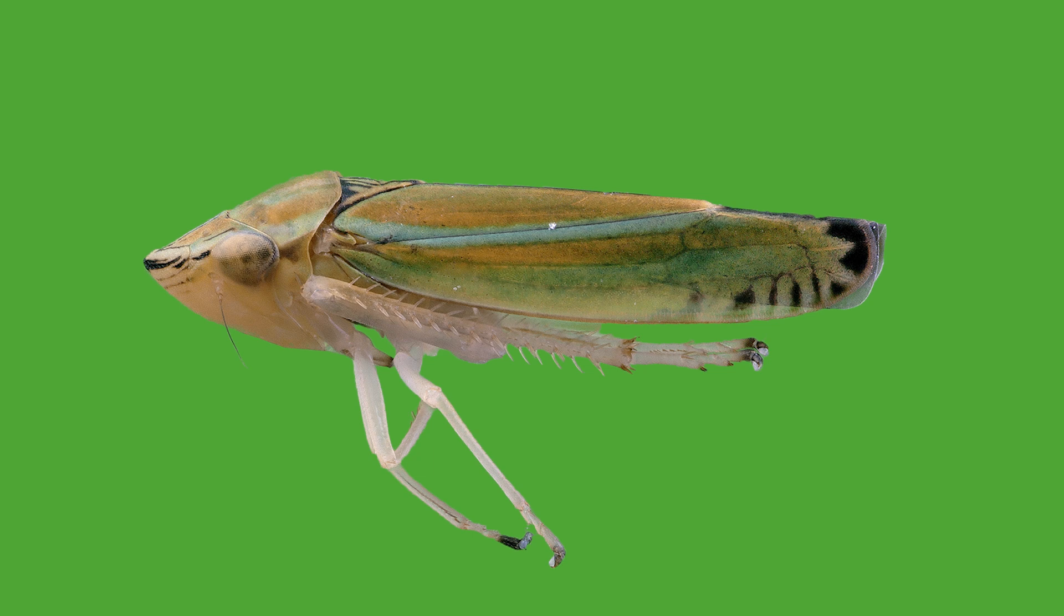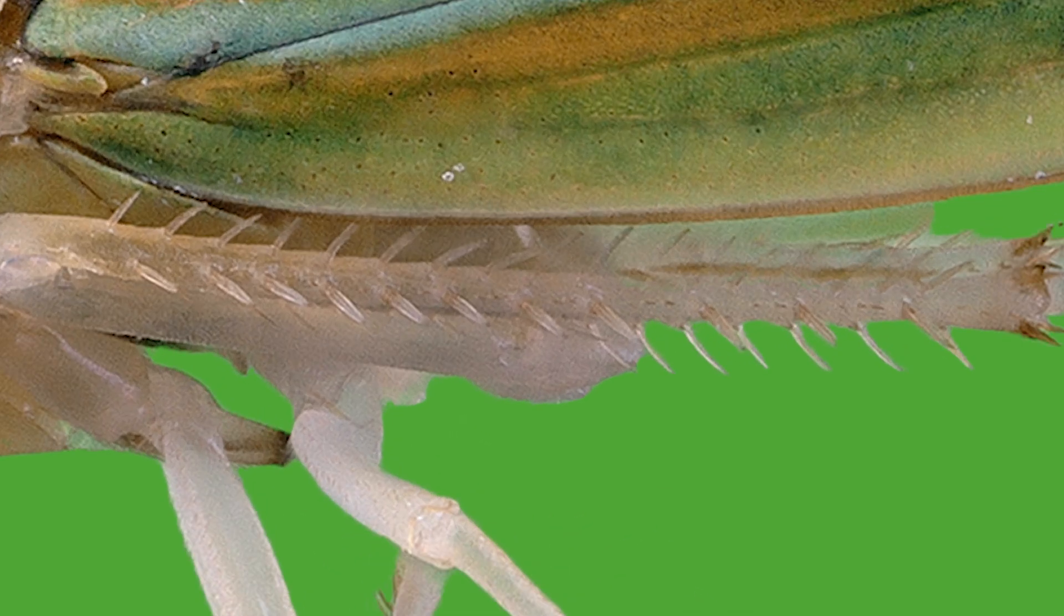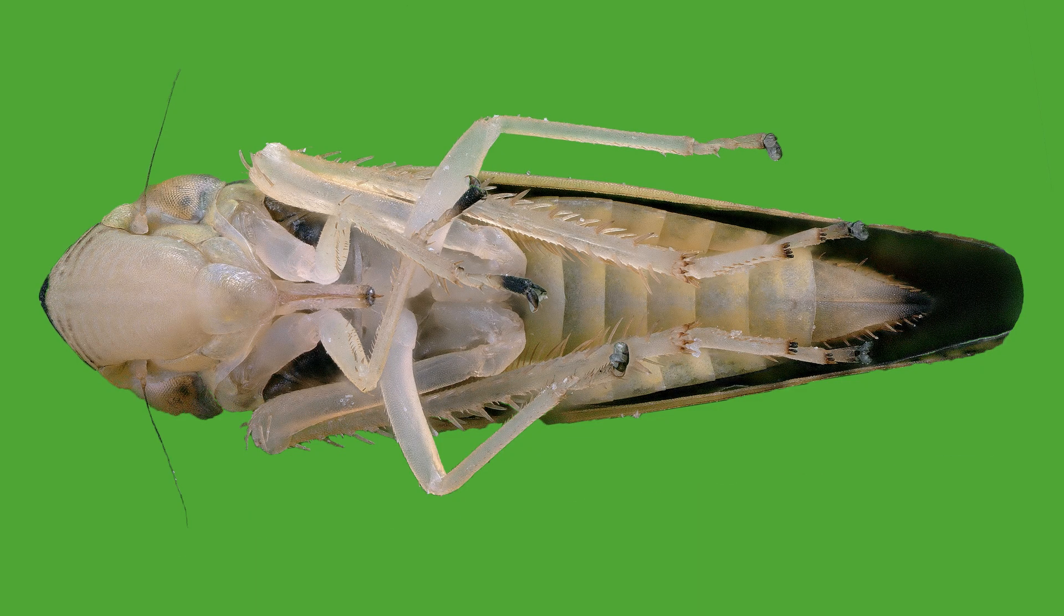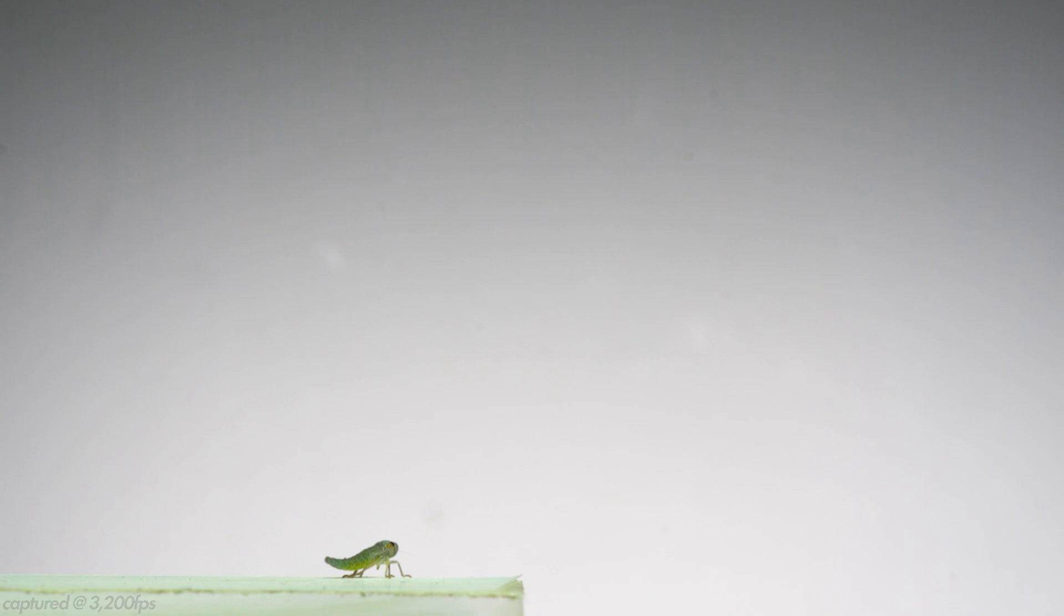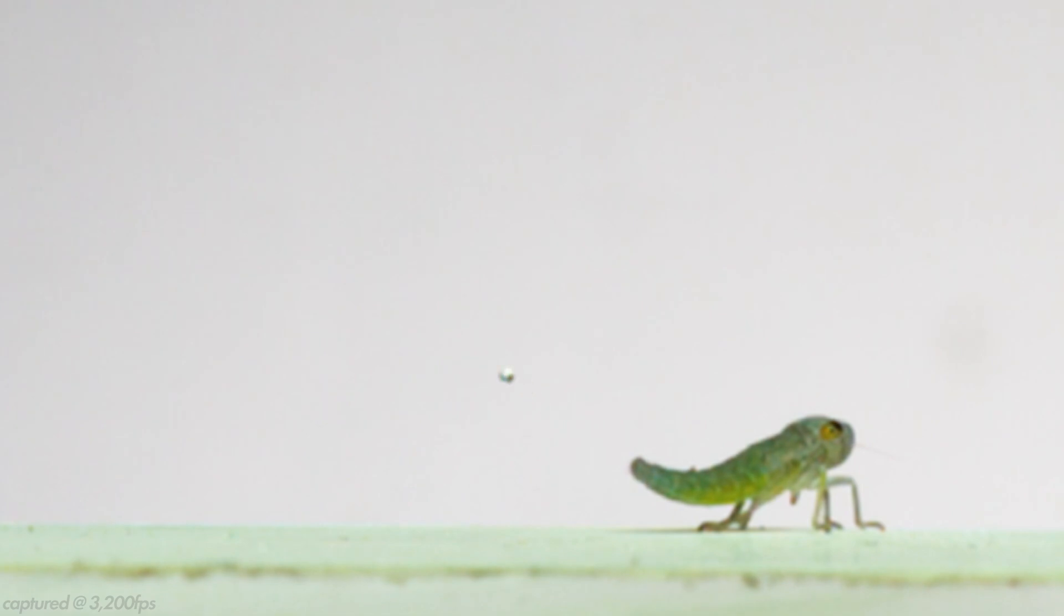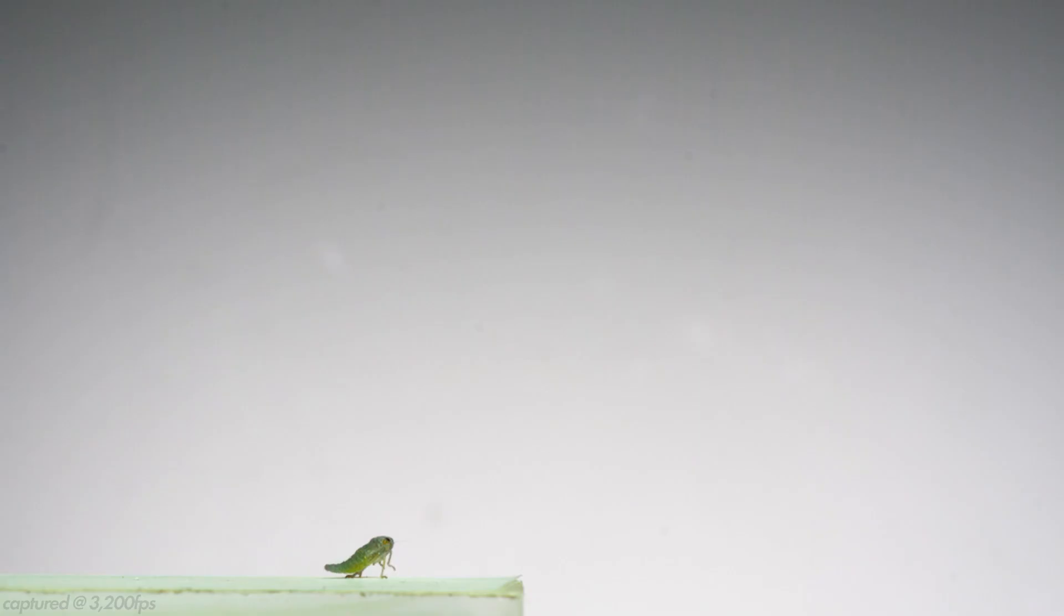My favorite kind of hopper might be a leafhopper. There are over 22,000 described species, and you can tell them apart from other types by the four rows of spines that run down their hind tibia. Like all the insects in this video, they have needle and straw-like mouthparts to pierce plant stems and feed on the sap. They have to take in so much sap to extract the nutrients they need, they end up excreting a ton of sugary honeydew. And they can do that in fantastic fashion too. But this video isn't about their skills in excrement flinging, it's about them doing this.